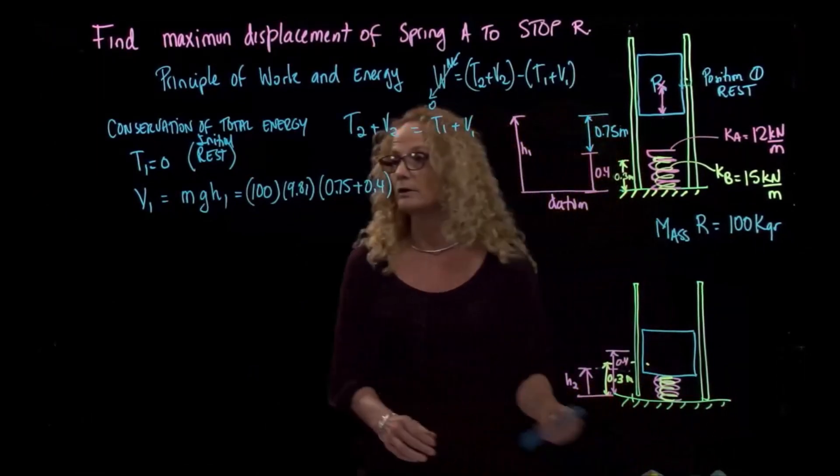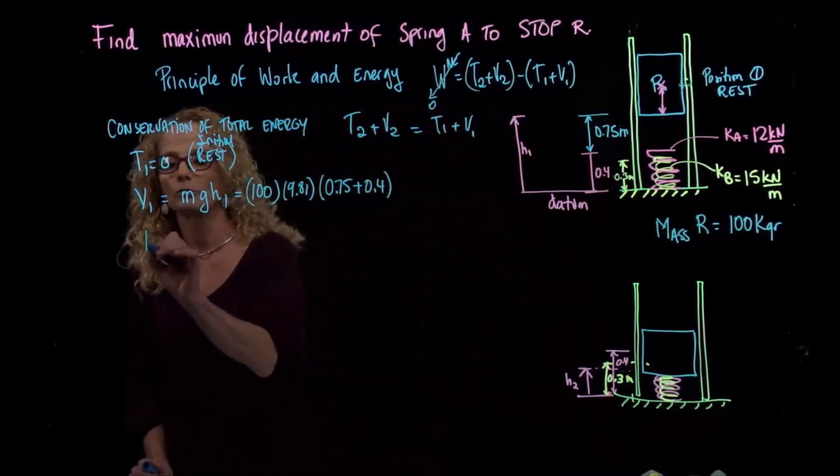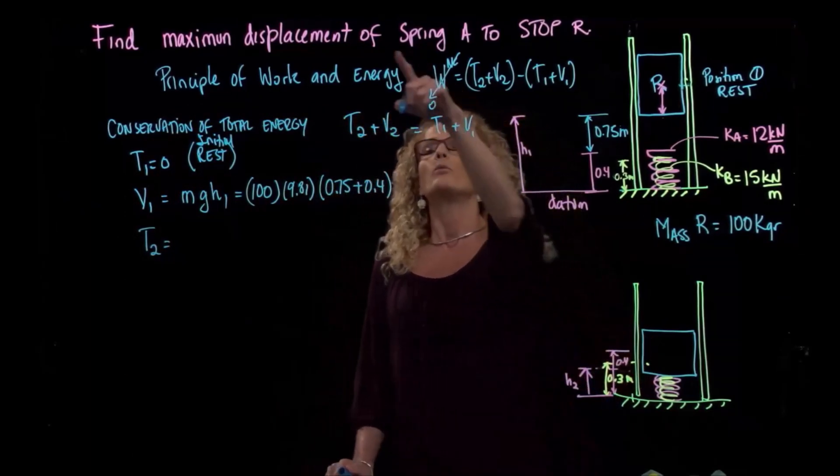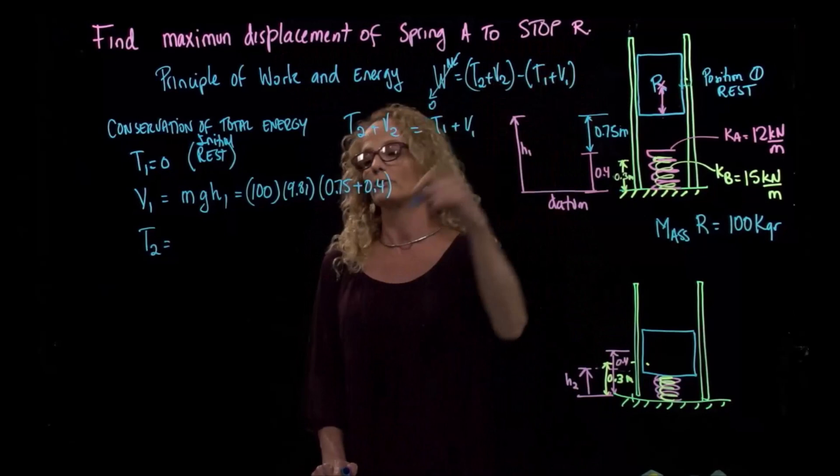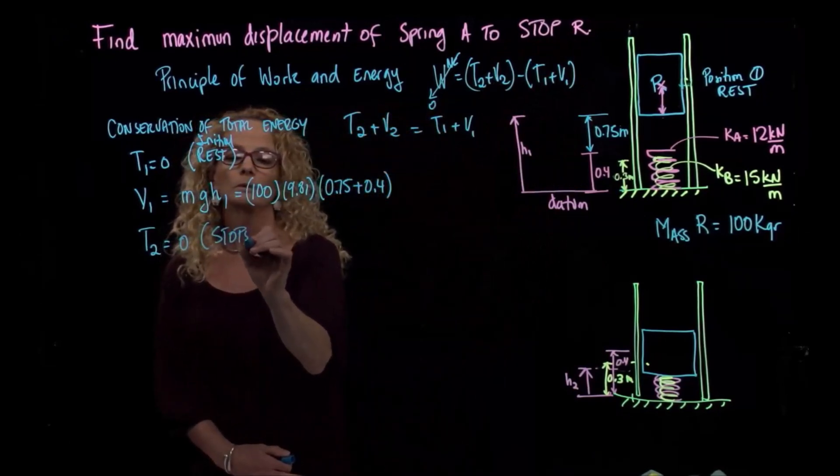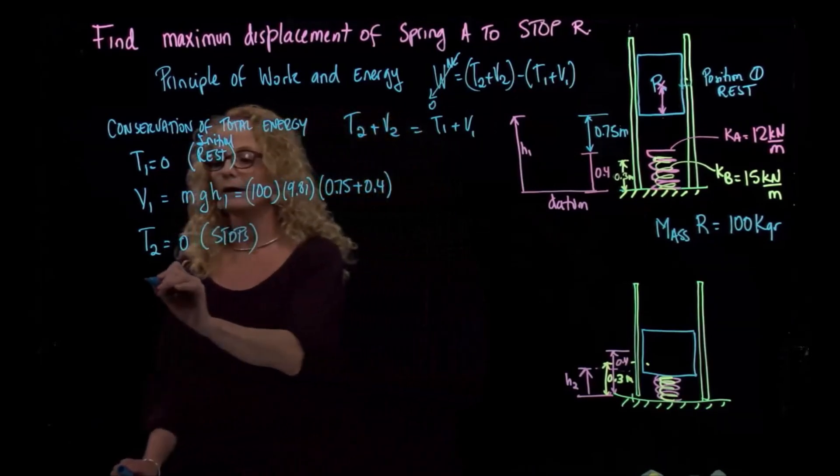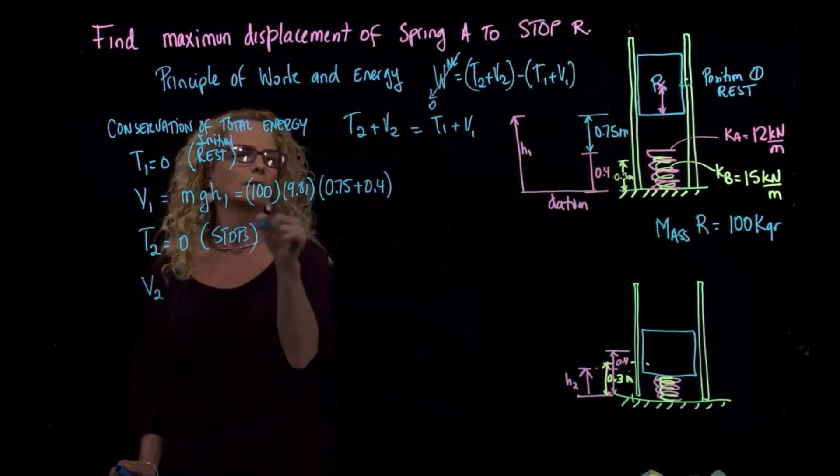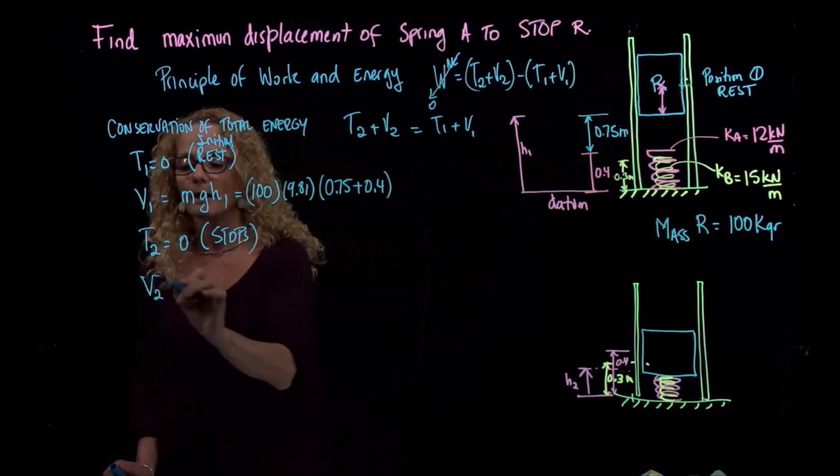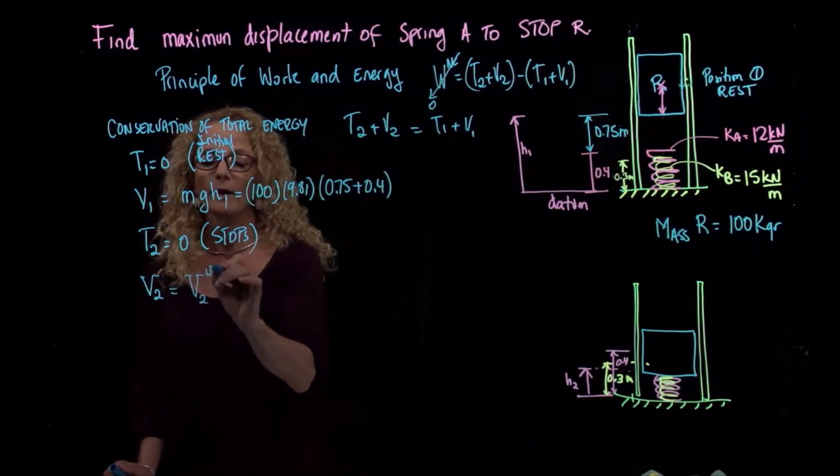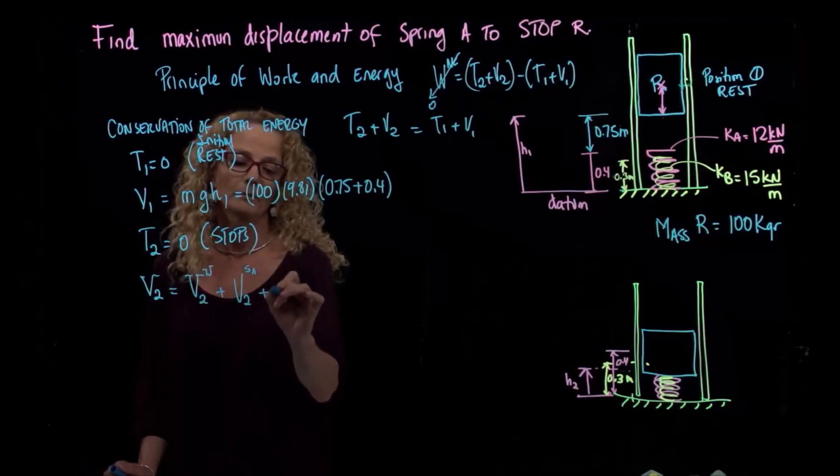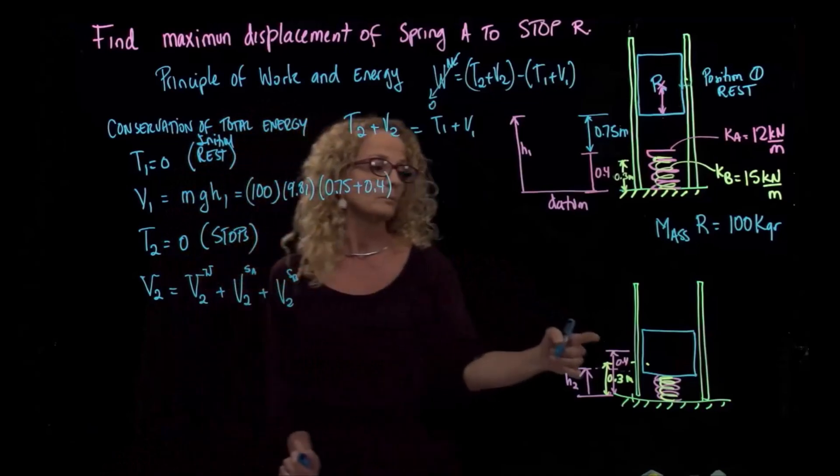We continue analyzing position 2. We are being asked to find this final displacement when the block stops. So we know that this is 0 because it stops. The velocity is 0. Here I had only the gravity because I didn't have any, the springs were unstretched. But here I have the potential energy of the weight plus the potential energy of spring A plus the potential energy of spring B. So I have three potential energies.